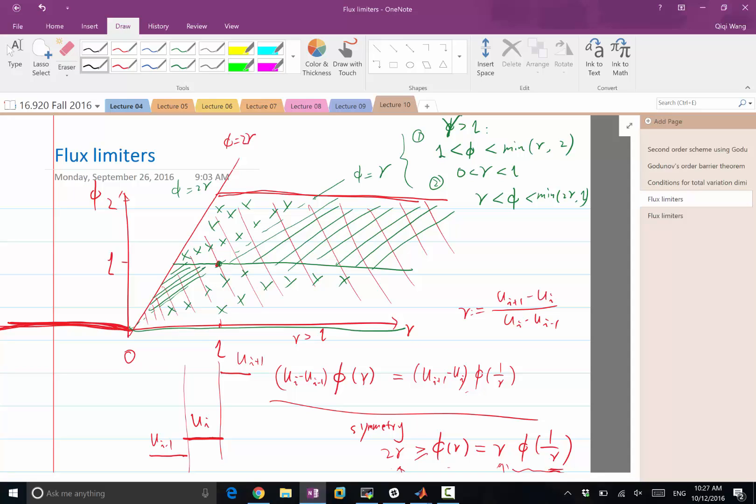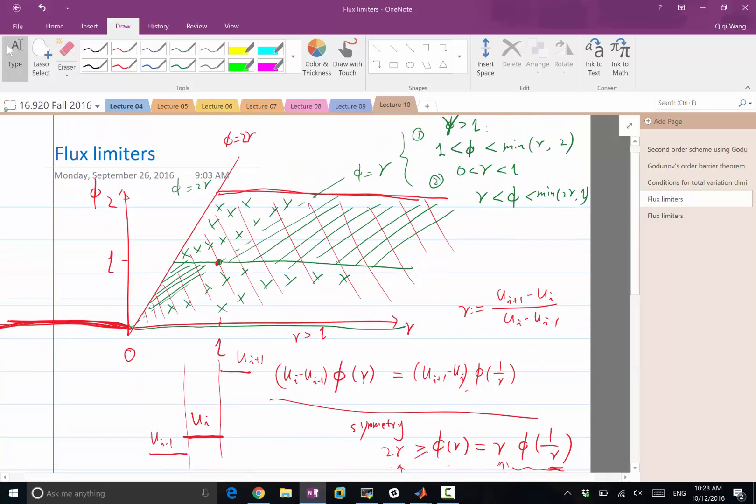So now we can start discussing several possible choices. Do you have a question? Question here? Okay. So the first choice is the one that gets us to second-order accuracy while being as close to the piecewise constant reconstruction as possible. What is that? Remember, φ equal to 0 means piecewise constant reconstruction, right? Not using the slope at all. So how do we get second-order accuracy being the green region while being as close to φ equal to 0 as possible? No question we have to trace through this 0 line. In this region, I can't be state 0, but I can stay at φ equal to r.